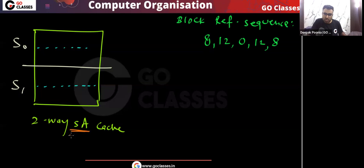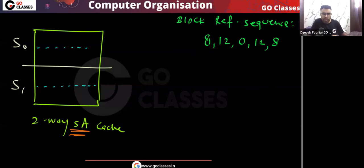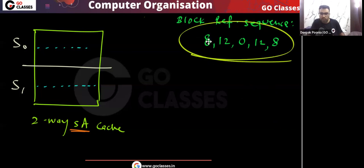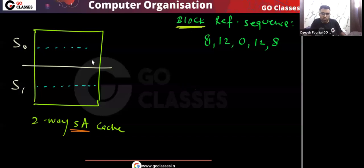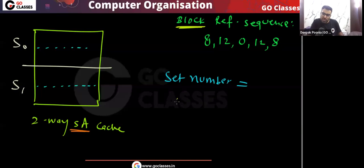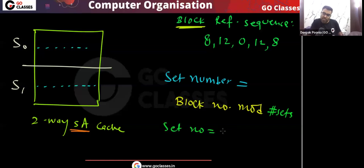In a set associative cache memory, any memory block will map to a unique set. If the block number is given in decimal, we can find the set number easily. The set number to which a particular memory block maps is: set number = block number mod (number of sets). Here the number of sets is two, so we divide the block number by two and find the remainder.